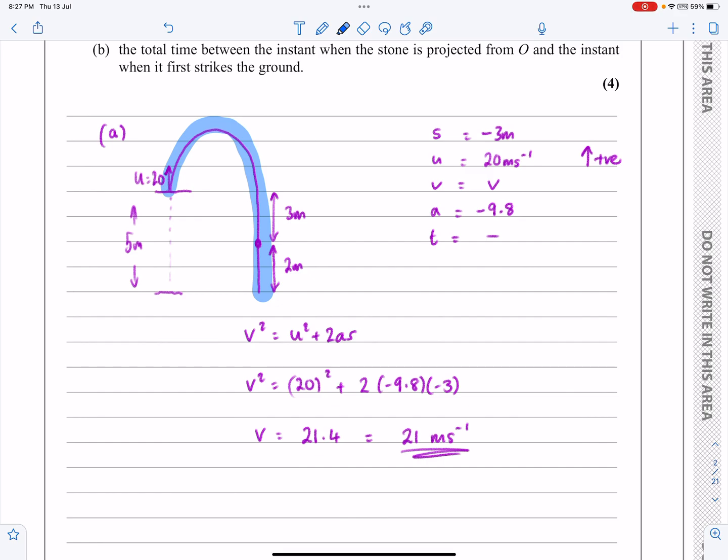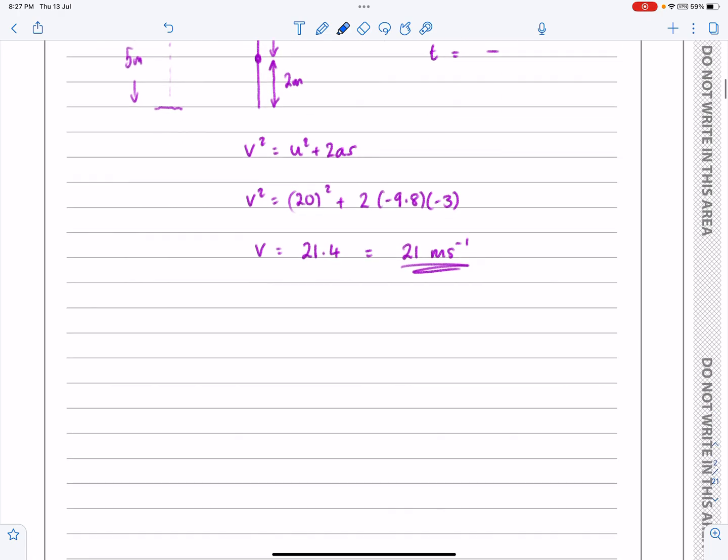So S is going to be minus 5 this time. I can still keep U as being 20. I can still keep A as being minus 9.8, and I'm interested in T. So let's go and do SUVAT for that second part.